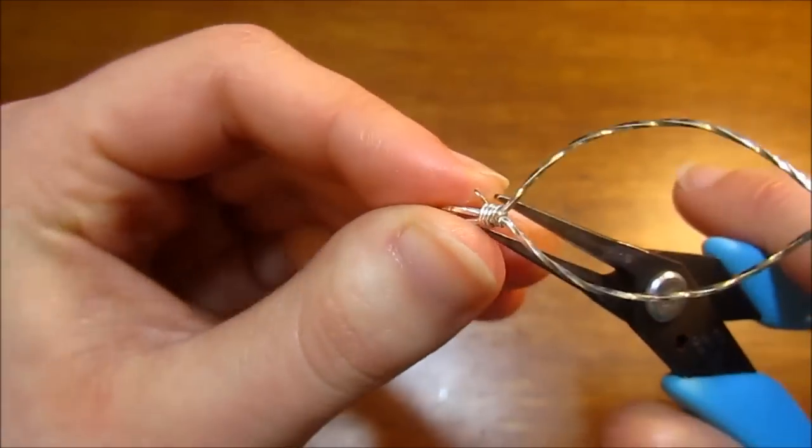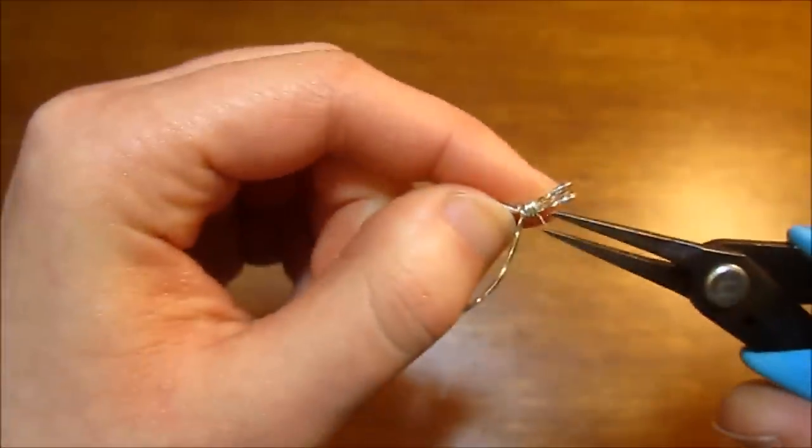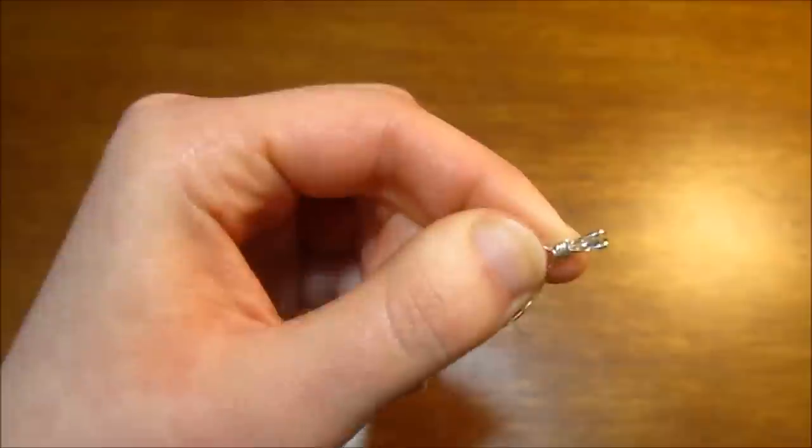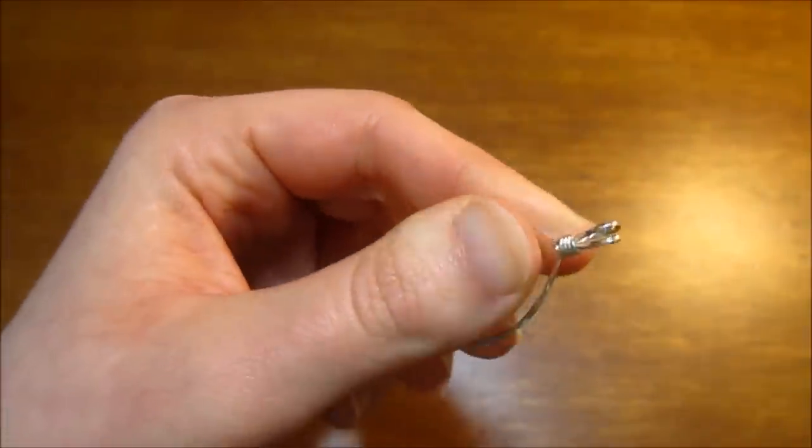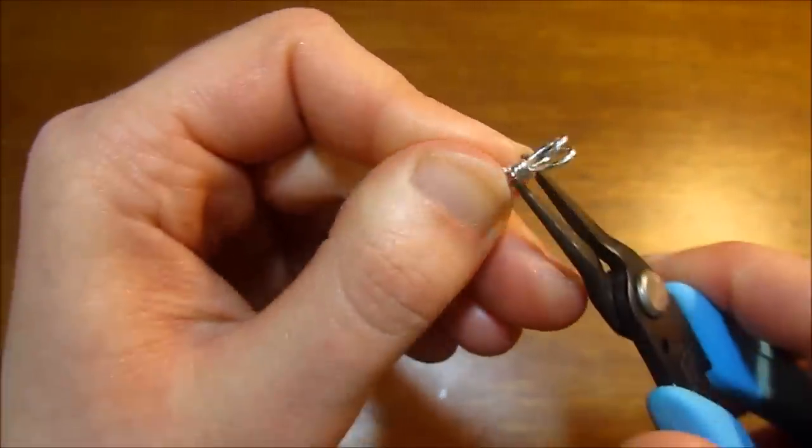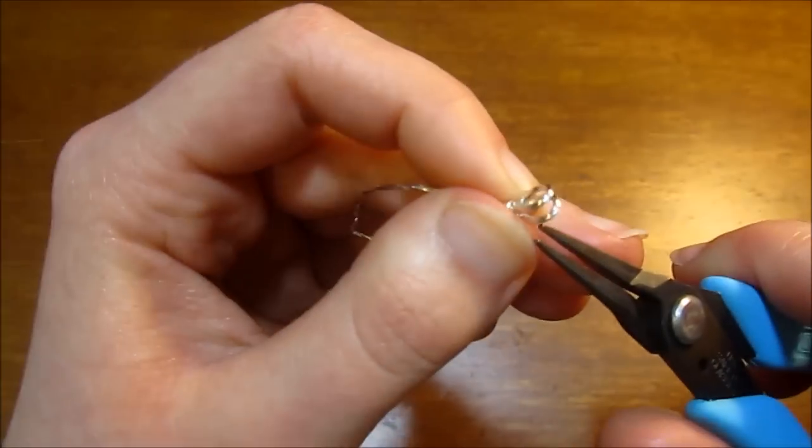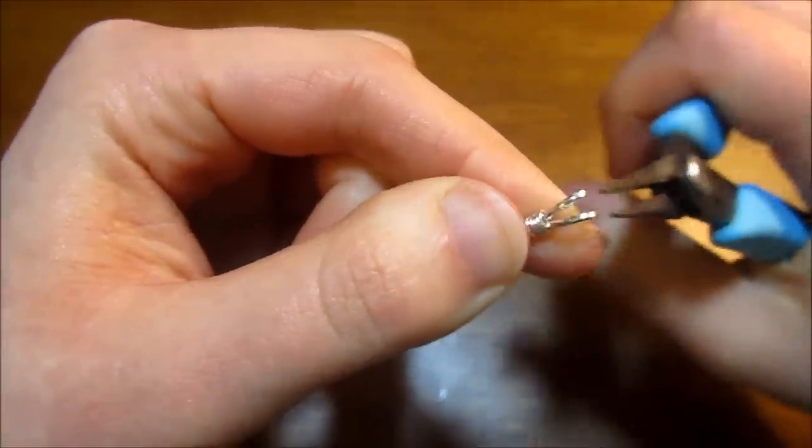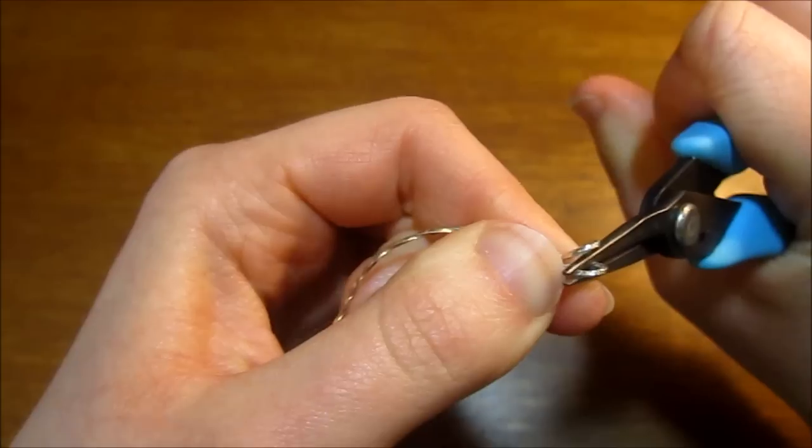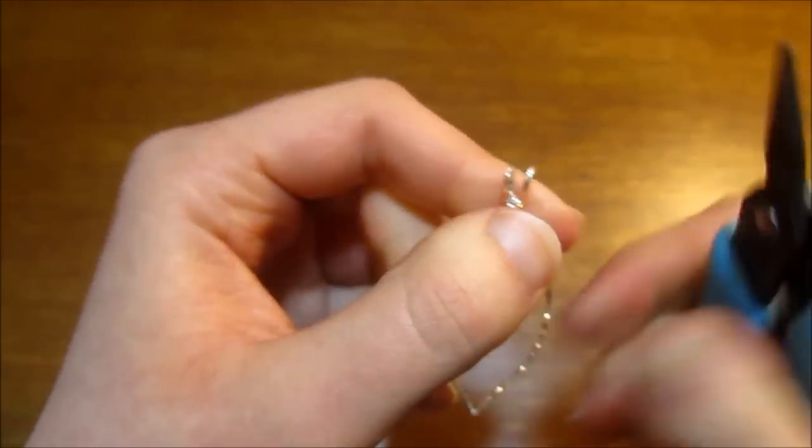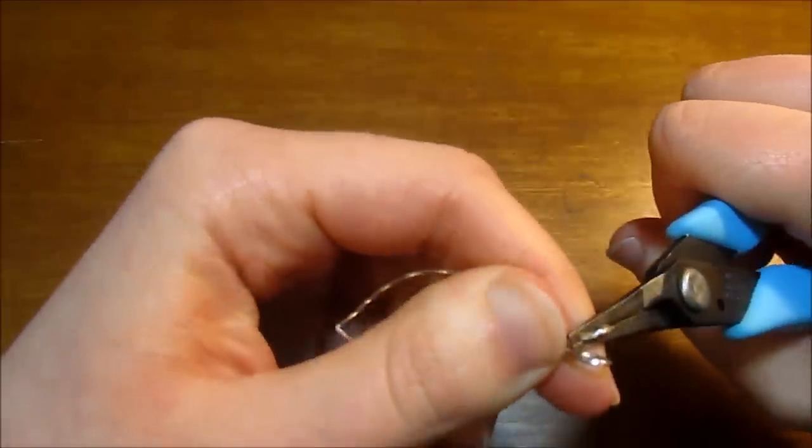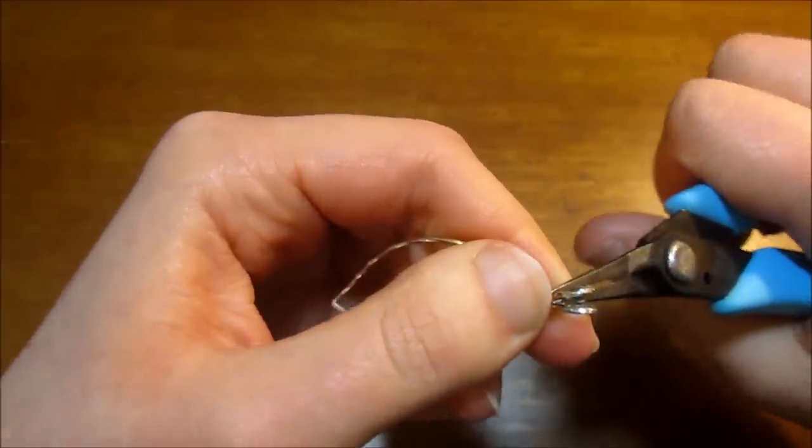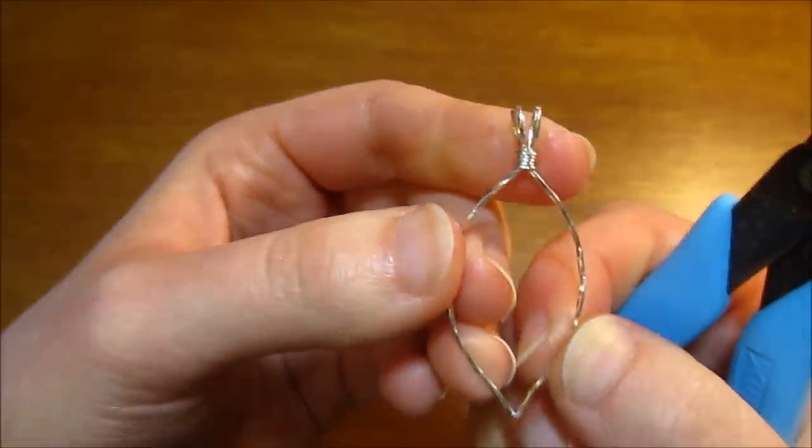And I'm just going to use my chain nose pliers to make sure that the end is down very securely and isn't poking out or anything. Doing the same thing with the other tail. And you may need to separate these out just a little bit. I feel like it looks good to have a slight V shape, if you will, just like that.